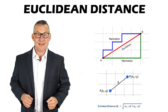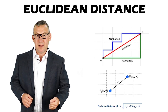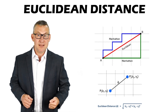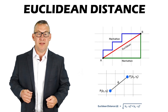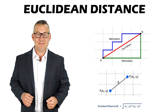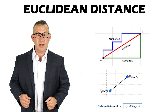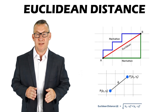Euclidean distance is the straight-line distance between two points. It can be calculated from Cartesian coordinates using the Pythagorean theorem, and is also known as the Pythagorean distance. Euclidean distance is used on projected maps or over short distances.